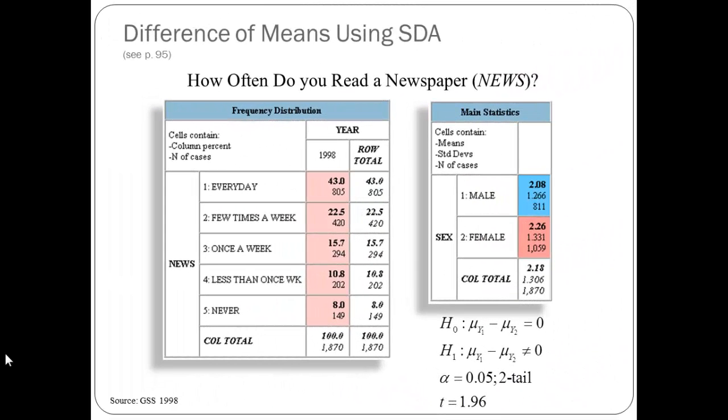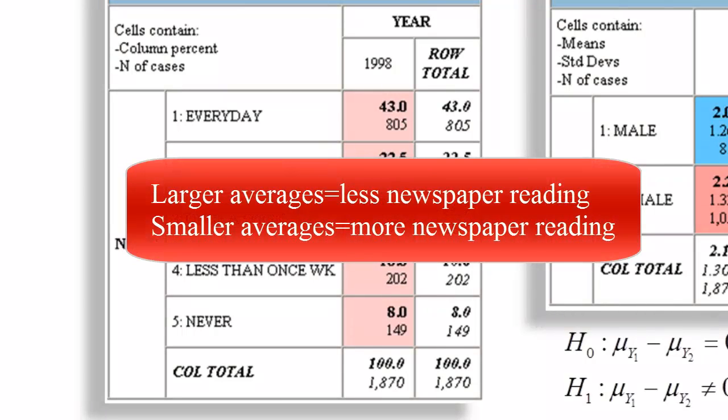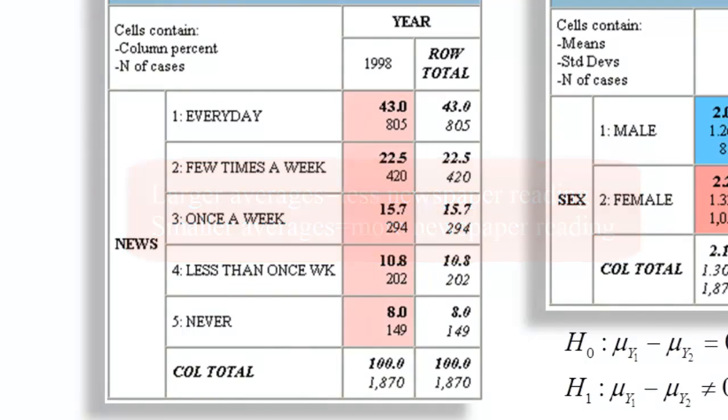Let's start by looking at an example. On this page I'm showing you a frequency distribution of a variable called news. This asks people how frequently they read a newspaper. The options are every day, a few times a week, once a week, less than once a week, or never. Notice that those are coded from one to five, where one means you read a newspaper every day and five means you never read a newspaper. So we need to be careful in interpreting statistics because larger values will mean reading the newspaper less frequently.